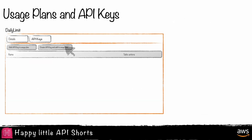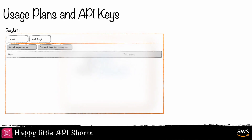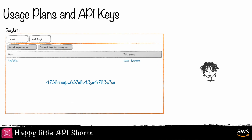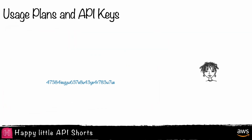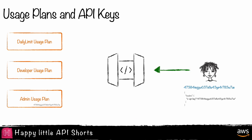To tie a request to a specific usage plan, API Gateway uses API keys. API keys are generated from the API Gateway console, API, AWS CloudFormation, or the AWS CLI. The keys are unique alphanumeric strings given to clients to pass in the request header as x-api-key. These keys are associated with one or more usage plans.